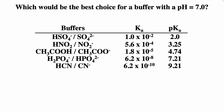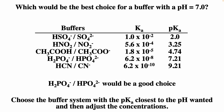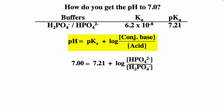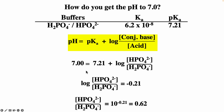For a buffer at pH 7, we choose an acid with pKa close to 7. The dihydrogen phosphate/hydrogen phosphate system with pKa = 7.21 is a good choice. Using Henderson-Hasselbalch: 7 = 7.21 + log(base/acid). Subtracting 7.21: −0.21 = log(base/acid). Taking to the power of 10: the ratio of hydrogen phosphate to dihydrogen phosphate should be 10⁻⁰·²¹ = 0.62 to achieve a pH close to 7.